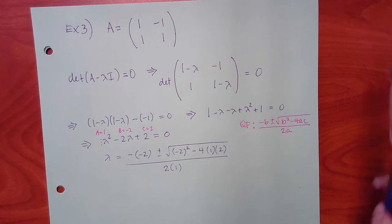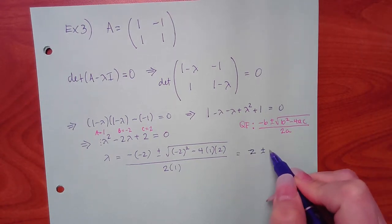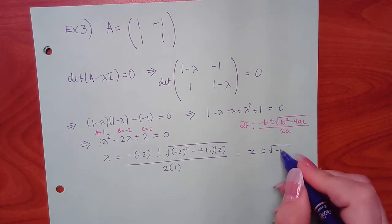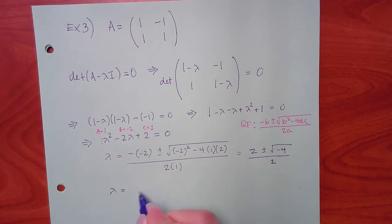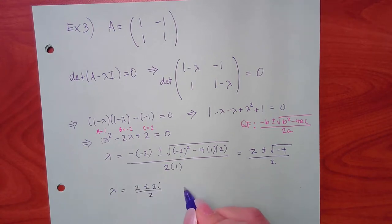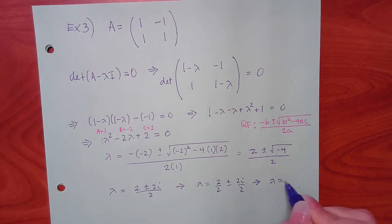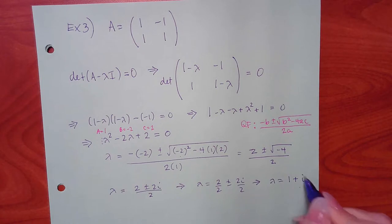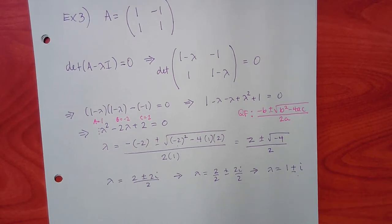So 2 plus or minus 2i over 2, giving lambda equals 1 plus or minus i. We have two lambdas: 1 plus i and 1 minus i.